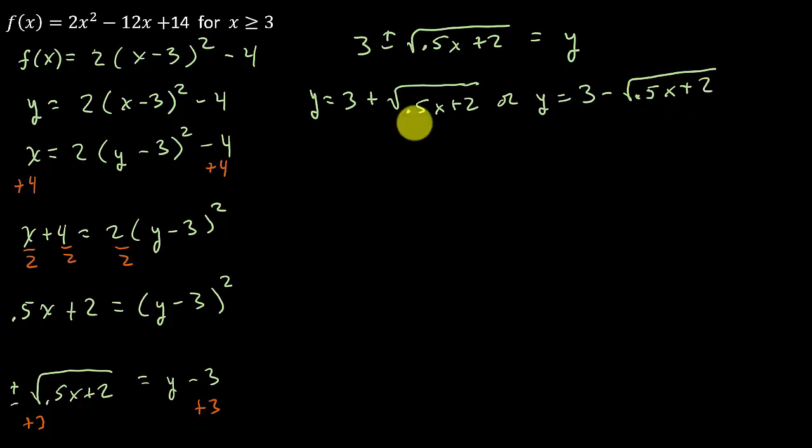Or y equals 3 minus the square root of 0.5x plus 2. Alright. So it's one of these. It can't be both of them. Which one's the inverse? See if you can make a guess before I tell you the answer.